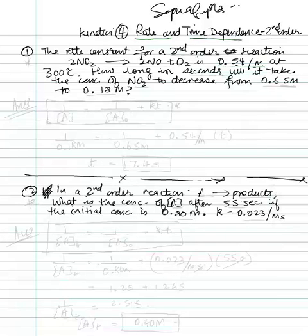Rate and time dependence. This one is for second-order reaction now. So let's read the problem. The rate constant for a second-order reaction, 2NO2 to give 2NO plus oxygen.